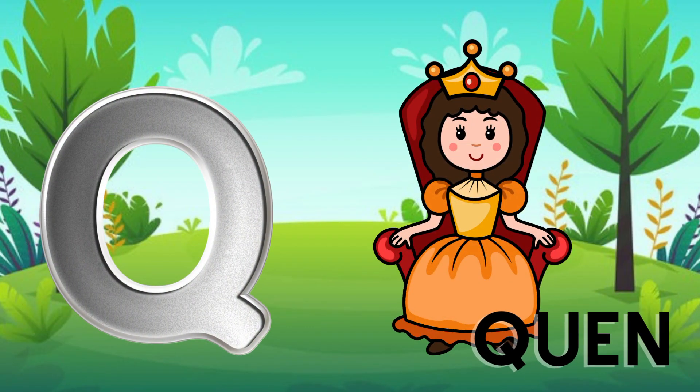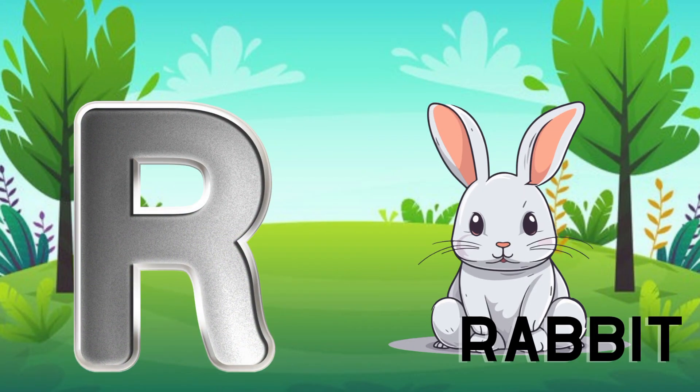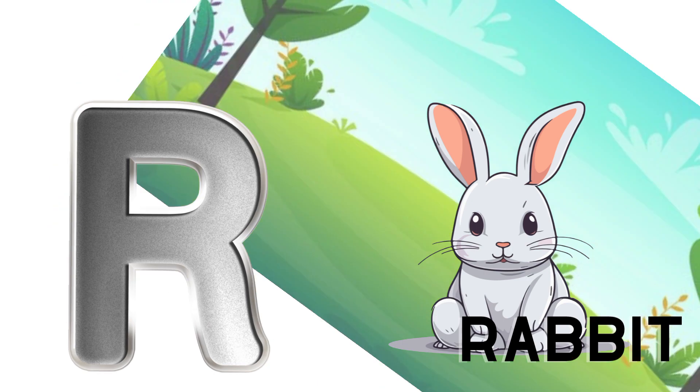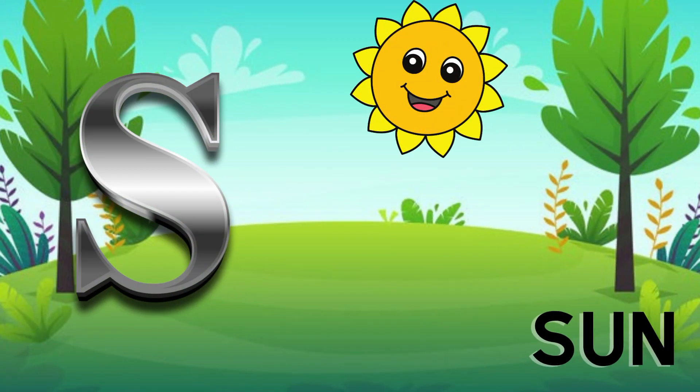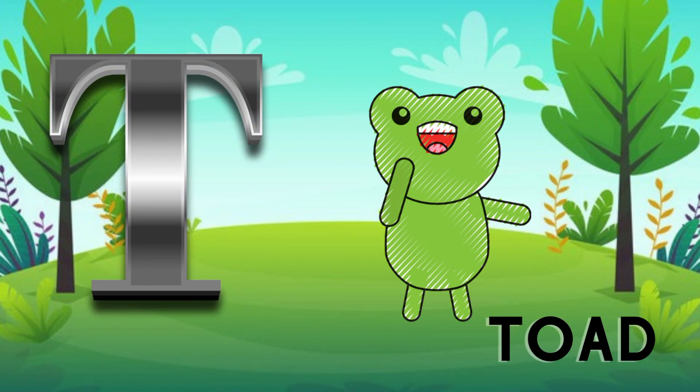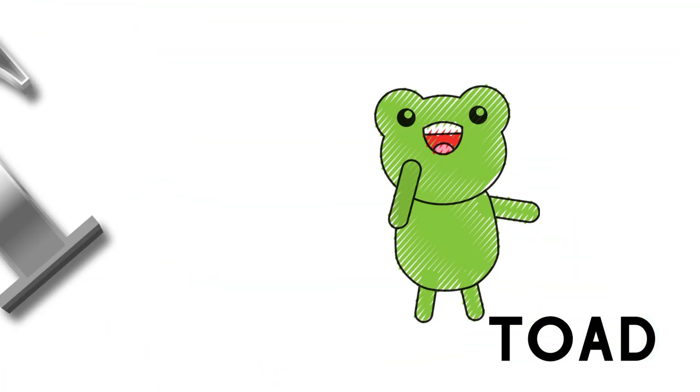Q is for queen, q-q-queen. R is for rabbit, r-r-rabbit. S is for sun, s-s-sun. T is for toad, t-t-toad.